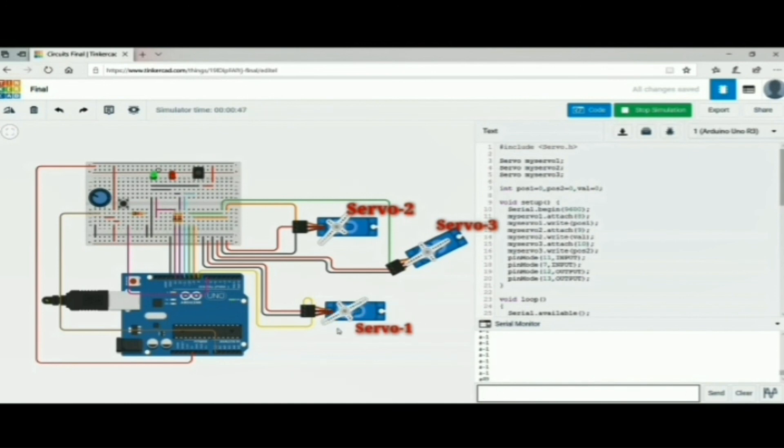Servo 1 locks. Now I am directly pressing the launching button. Servo 3 stretches the spring. Servo 1 unlocks. Launching takes place. Servo 3 comes back to its initial position. The red LED turns on, indicates that the absence of ball.